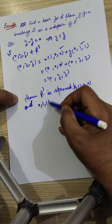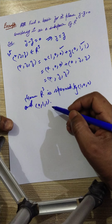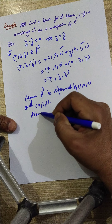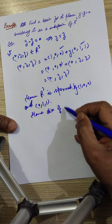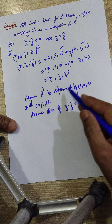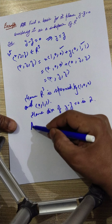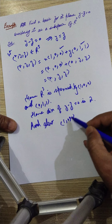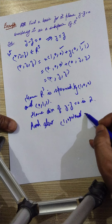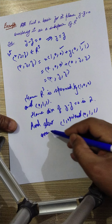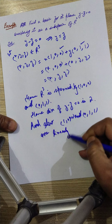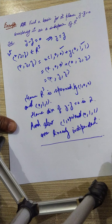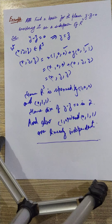The subspace is spanned by vectors (1, 0, 0) and (0, 1, 1), so the dimension of the subspace Y minus Z equal to zero is two, since there are two spanning vectors. Thank you. We will continue in the next lecture.